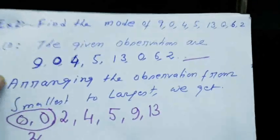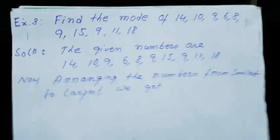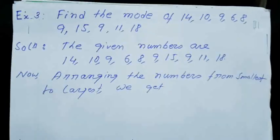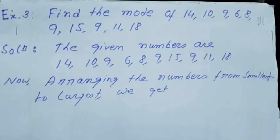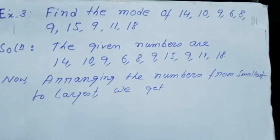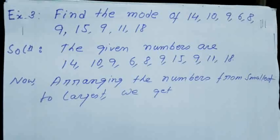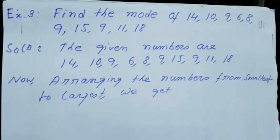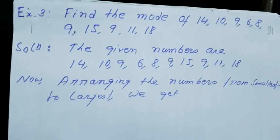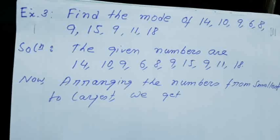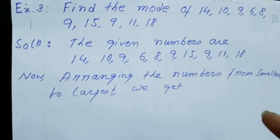Moving to the next problem. Find the mode of: 14, 10, 9, 6, 8, 9, 15, 9, 11, 18. We have to find out the mode. We know that the observation which has the highest number of frequency is the mode. The given numbers are these. Now we have to arrange the numbers from smallest to largest.